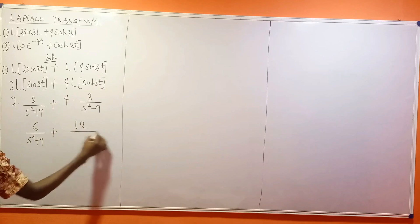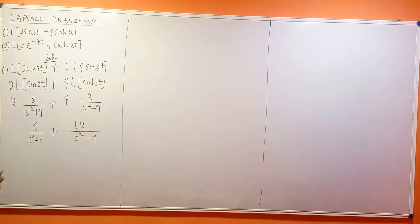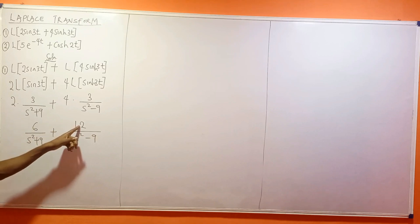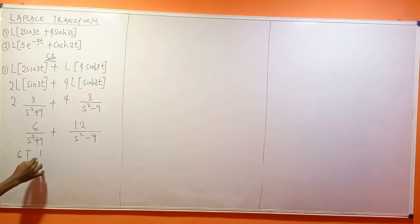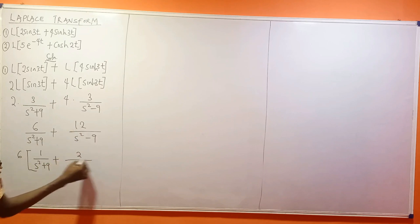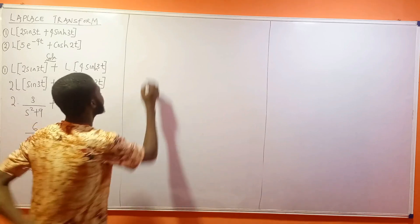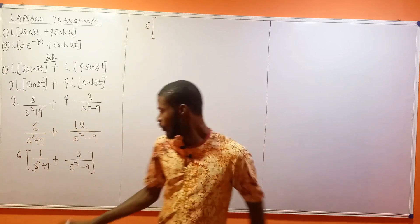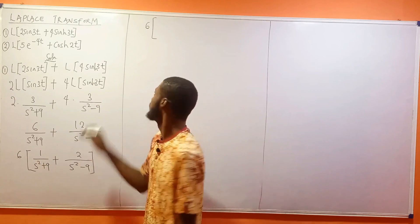Before taking the LCM between 6 and 12, notice 6 is common. So this is 6 times the bracket: 6 over 6 gives 1 over s² plus 9, then 12 over 6 gives 2 over s² minus 9. So we have 6 times the bracket with 1 over s² plus 9 plus 2 over s² minus 9.